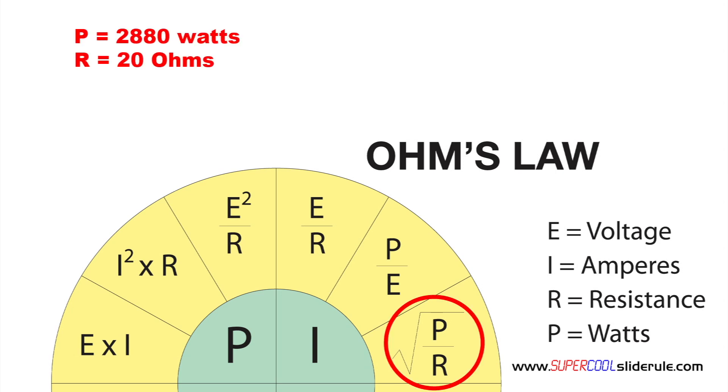For this example, I will use 2880 watts at a resistance of 20 ohms. Let's substitute these values in our equation. Replace the P with watts of 2880. Replace the R with the resistance of 20.